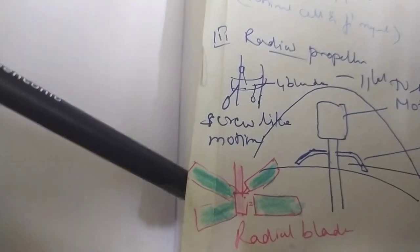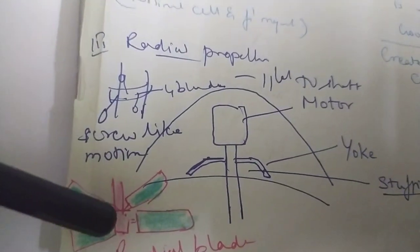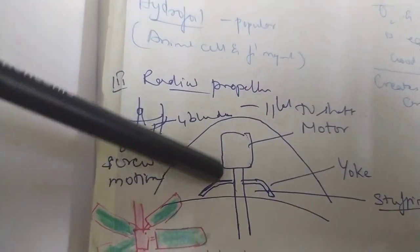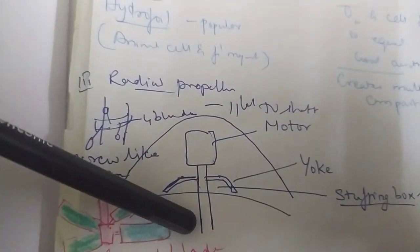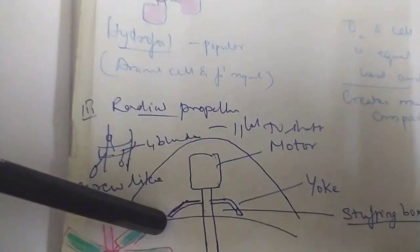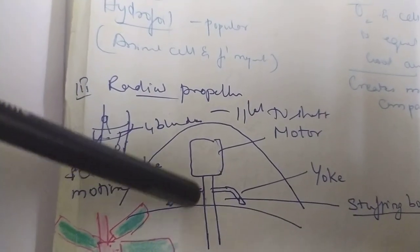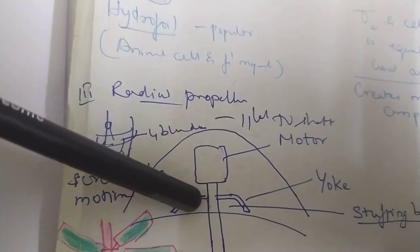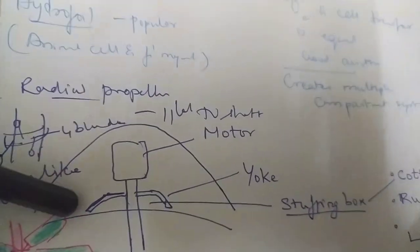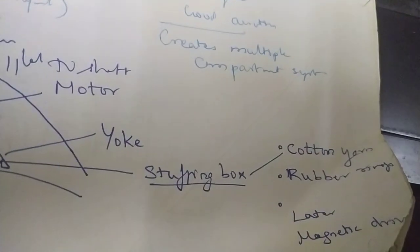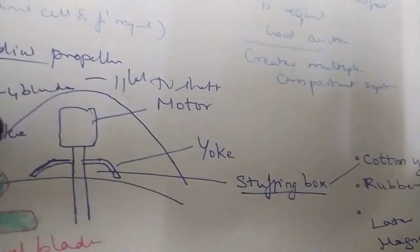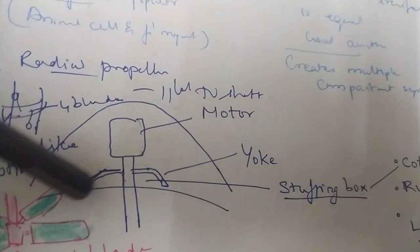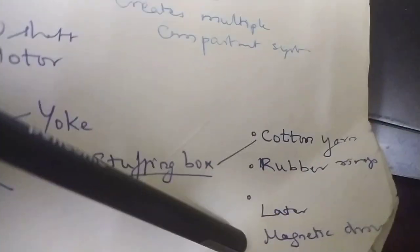Radial propellers have four blades. This is the head of the fermenter — the upper part — where the motor has a fixture to the shaft. Please remember there is a protective layer called a yoke. If any contaminants are present, the yoke will prevent them from entering. Near the motor and shaft fixture you will find what is called a stuffing box. Stuffing boxes can be cotton yarn or rubber rings, but with those there can be contamination during sterilization — water can be stored and drip down causing contamination.